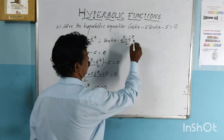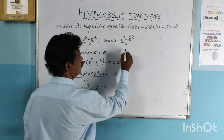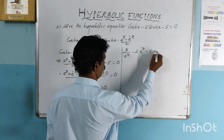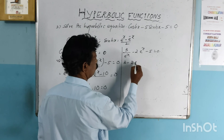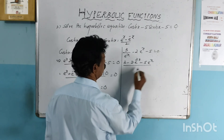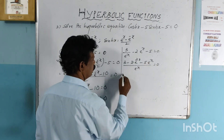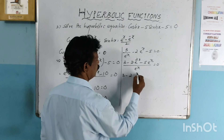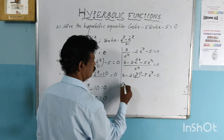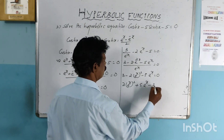Writing e raised to minus x as 1 over e raised to x, we get 3 over e raised to x minus 2 e raised to x minus 5 equals 0. Multiplying through by e raised to x gives 3 minus 2 e raised to 2x minus 5 e raised to x equals 0. Rearranging, 2 e raised to 2x plus 5 e raised to x minus 3 equals 0. This is a quadratic equation in e raised to x, where A equals 2, B equals 5, and C equals minus 3.